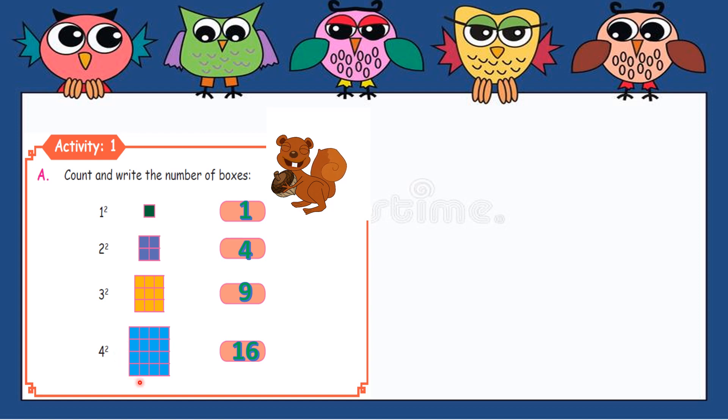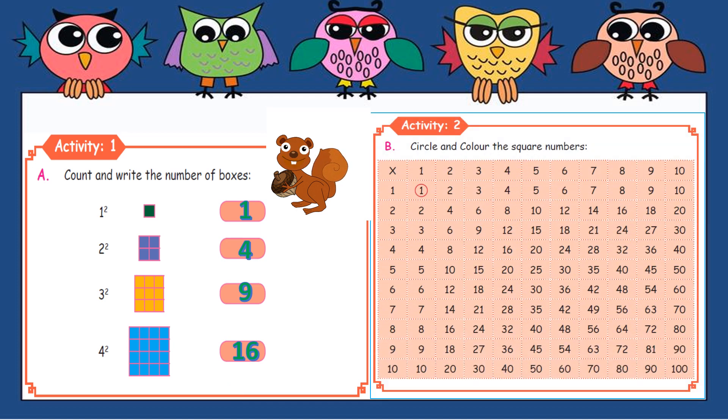One more activity. Circle and color the square numbers. See, one times one is circled for you. We are going to find all the square numbers as we did in the past video itself. So yes, two times two is four, then three times three is nine, four times four is sixteen, five times five is twenty-five.